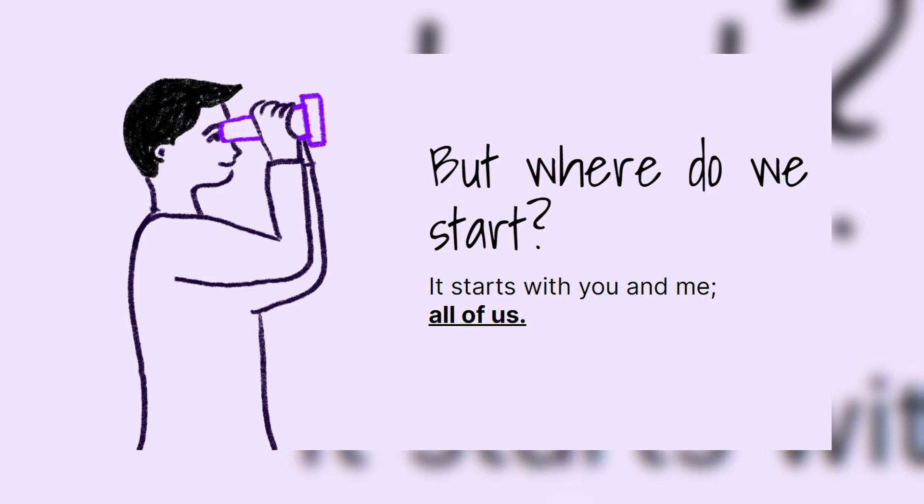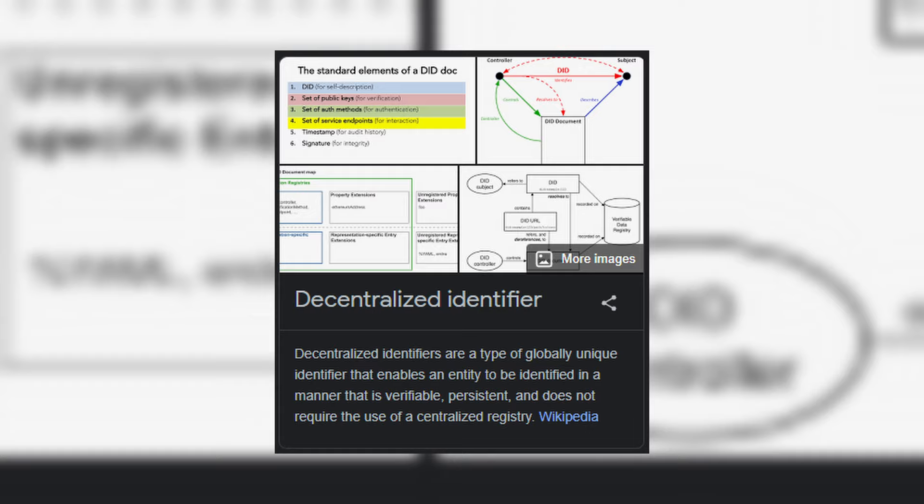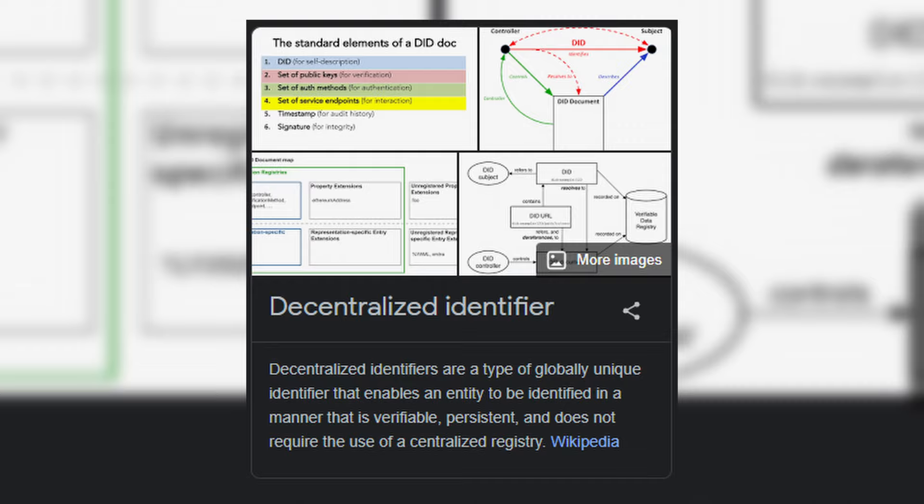Solving the ownership issue regarding data — the blockchain only generates a DID, a decentralized ID. The DID has the private key to unlock the encrypted data that is stored by Elastos Hive server, which is your own private, self-hosted, private IPFS.